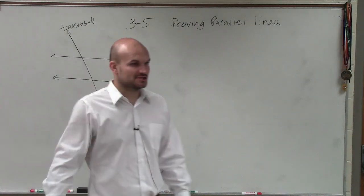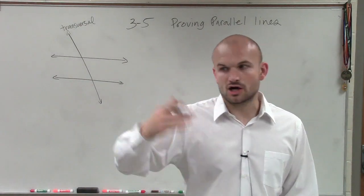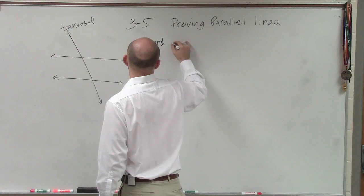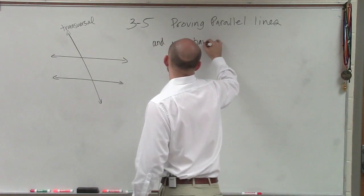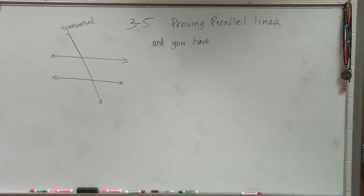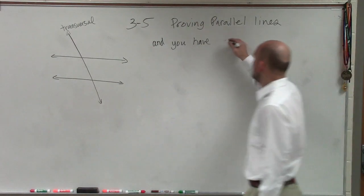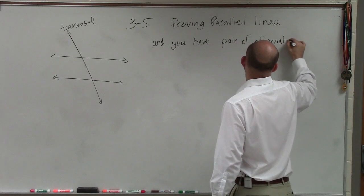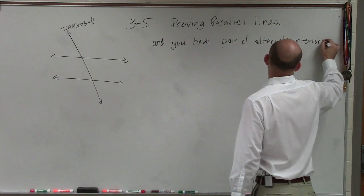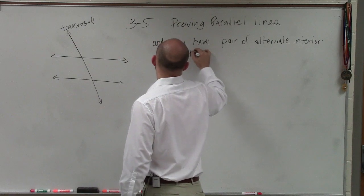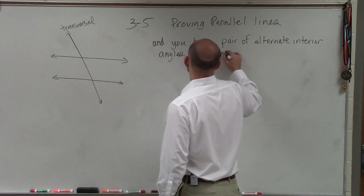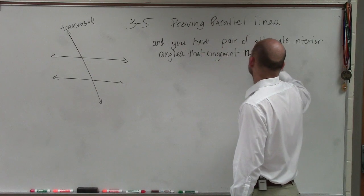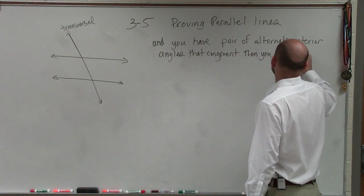All my statements are going to start like this: if two lines are cut by a transversal and you have a pair of alternate interior angles that are congruent — that means equal in measure — then you have parallel lines.